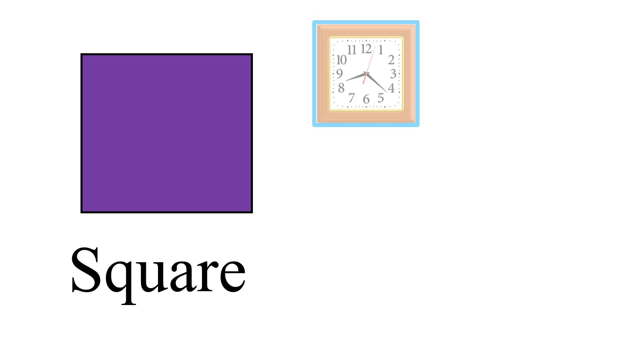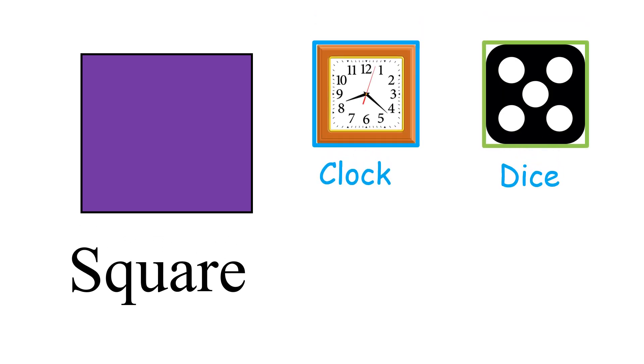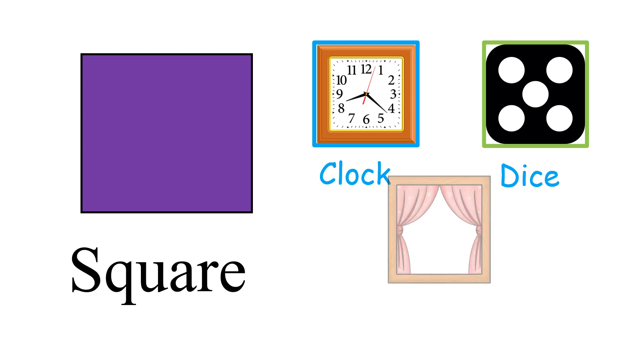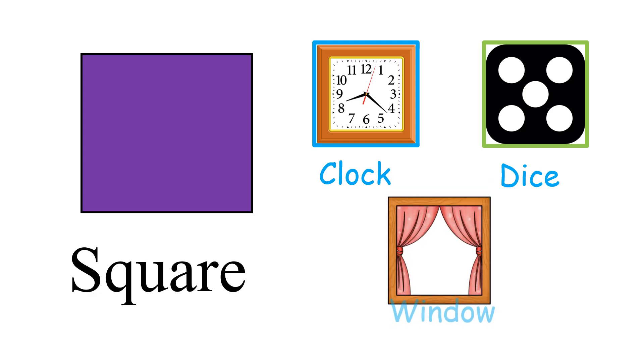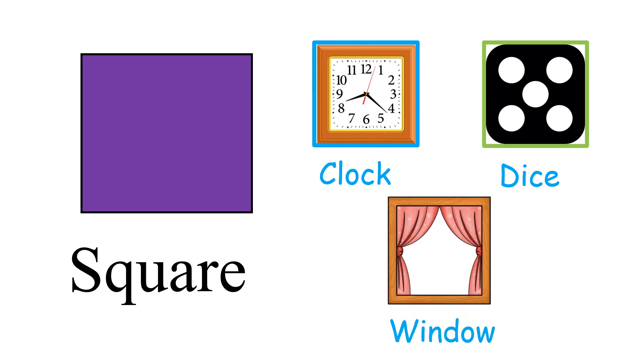Square. Clock. Dice. Window. These objects are square in shape.